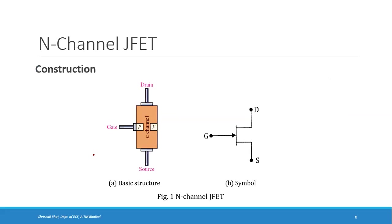We will cover two important aspects: construction and operation, and then characteristics and parameters. In construction and operation we will see the structure of JFET and how it operates. In characteristics we will see the behavior of current and voltages and some parameters. Coming to the construction of an N-channel JFET: there is a channel of N-type material into which two P-type regions are diffused. The channel is connected to two terminals — drain and source.